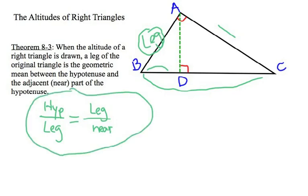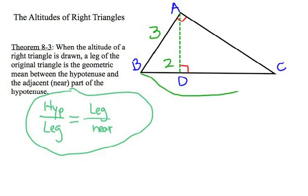Now, let's try an example. Let's find the hypotenuse BC if we know that the leg AB is 3, and we know that the short leg of the smallest triangle is 2. So the hypotenuse is divided up into two parts, a 2 section and an unknown section DC.